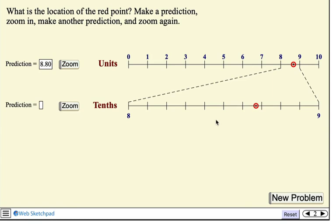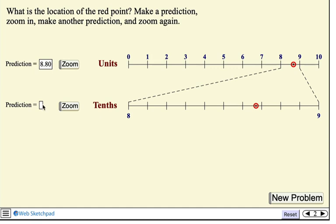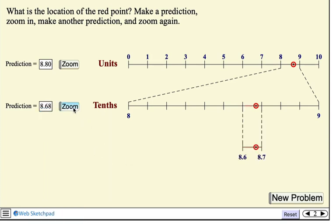Oh, I see it's not sitting at any of these tenths. It's somewhere between 8.6 and 8.7. Oh, so I'm going to have to now think about maybe making a prediction in the hundredths. So maybe 8.68. And I'll zoom in again.